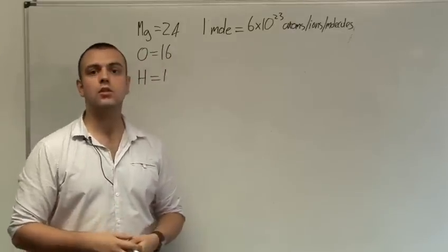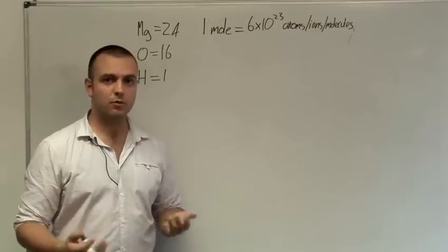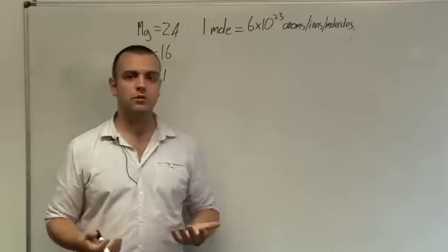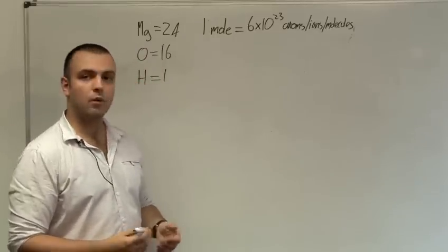6 times 10 to the 23 of course is 6 followed by 23 zeros. So it's a very large number but because atoms, ions and molecules are very small it's appropriate to use a very large number. This is called Avogadro's number after the scientist first came up with it.